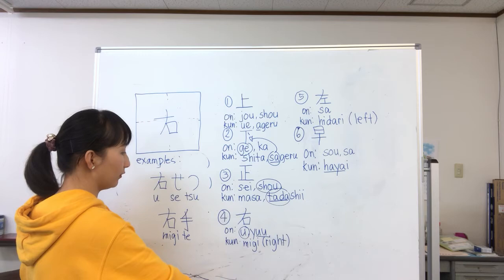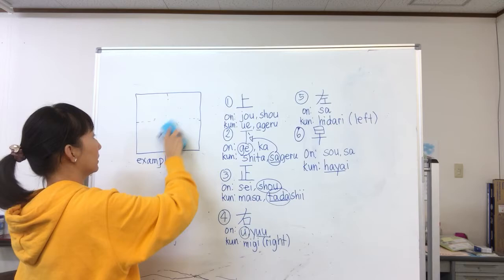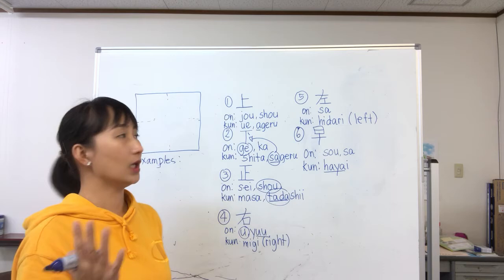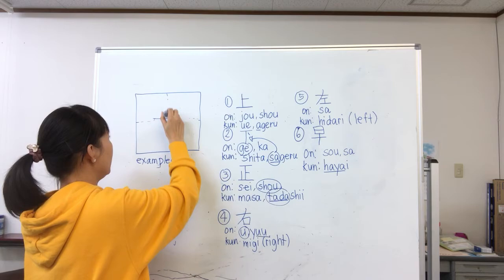If we have right, of course we have the left kanji as well. For this kanji, its onyomi is sa and its kunyomi is hidari, meaning left. If you see this kanji alone it means hidari, left. This is how you write hidari — one, two, three, four, five.